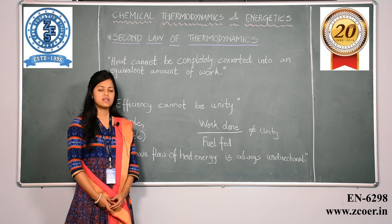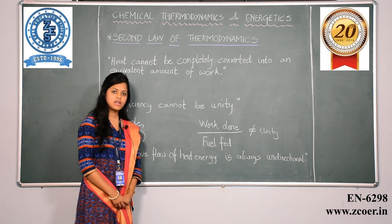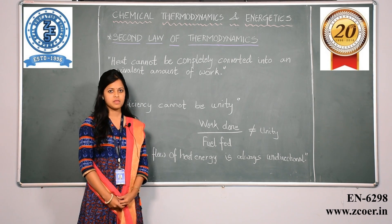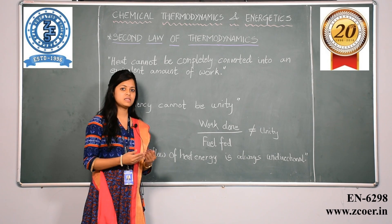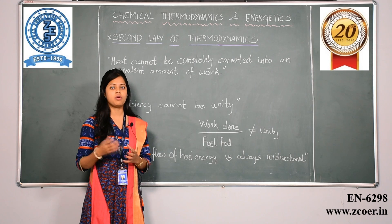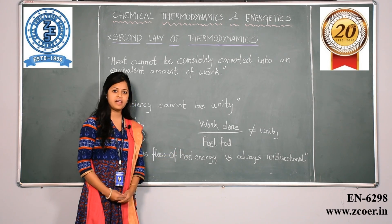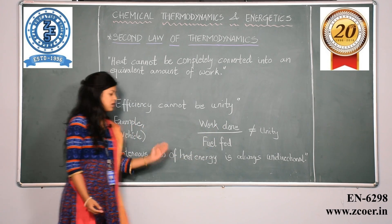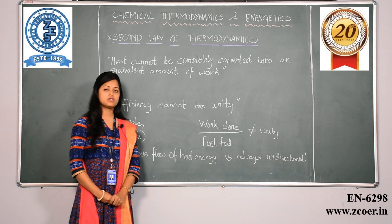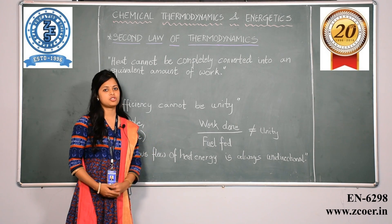Another way to state the second law of thermodynamics is that efficiency cannot be unity. We all know that our vehicles run on fuel, but never is this fuel 100 percent converted into work done. Always some part of the energy is wasted in the form of heat, and that is why the ratio of work done to fuel fed is never unity. Another statement of the second law is that spontaneous flow of heat energy is always unidirectional — it flows from higher temperature to lower temperature.